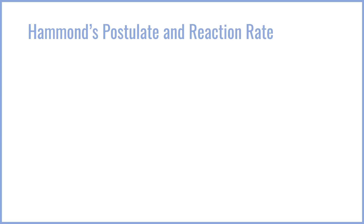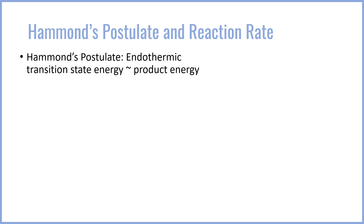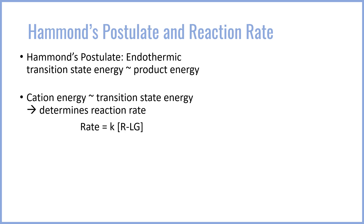Why is it that SN1 cation stability impacts the rate of the reaction? It has to do with something known as Hammond's postulate. Hammond's postulate states that for an endothermic reaction — that is, one where delta H is positive or the products are higher in energy than the reactants — the transition state for that reaction will look like the products more than it does like the reactants.